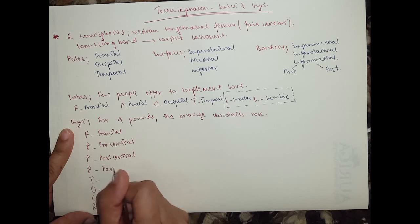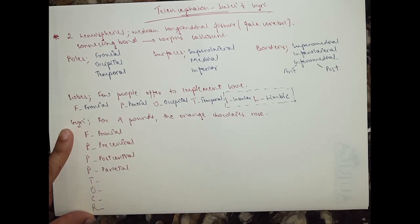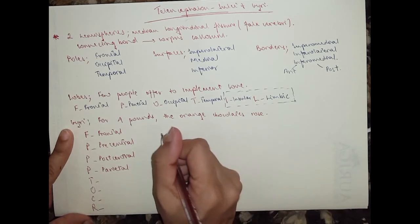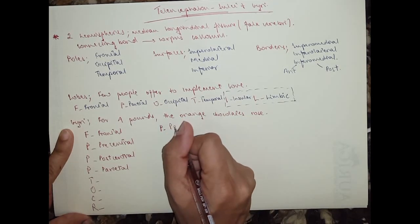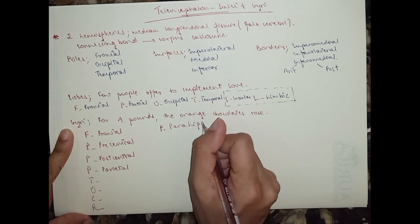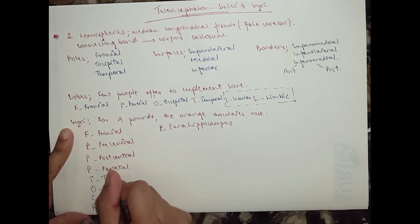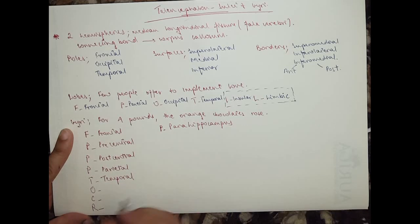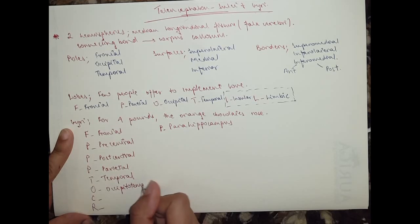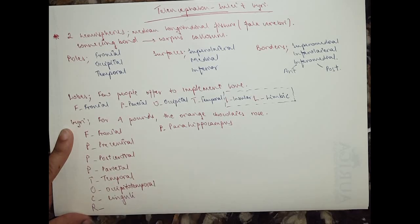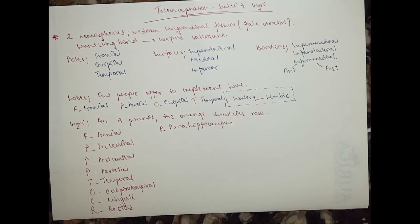The fourth P would be parahippocampal. T would be temporal. Then you've got the occipitotemporal. C gives us the cingulum, and R gives us the rectus gyrus.